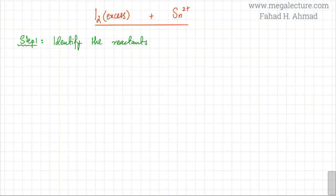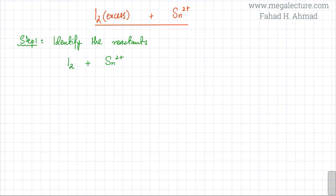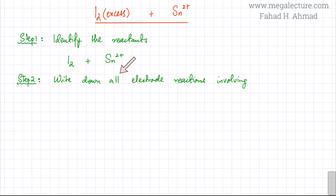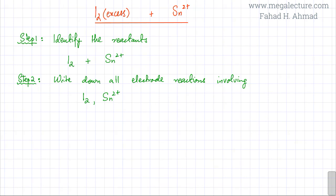Starting all over again with Step 1: identify the reactants, which is easy — we just have iodine and Sn²⁺. There's going to be a possibility of a reaction between I₂ and Sn²⁺. Step 2: we need to write down all electrode reactions involving these reactants, so we need to find all electrode reactions that involve Sn²⁺ and write down their E° values.